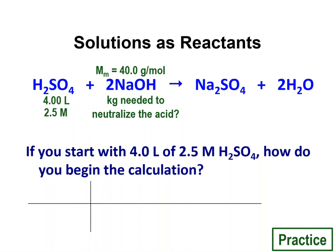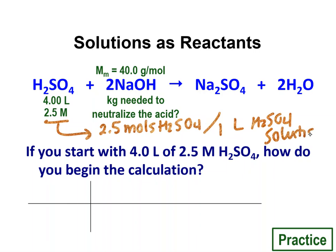Well, the thing to remember is that molarity is actually a conversion factor itself. So this 2.5 molar actually means 2.5 moles H2SO4 per one liter of H2SO4 solution. And since it has two parts, you don't usually start with that. You start with the one number, one unit.